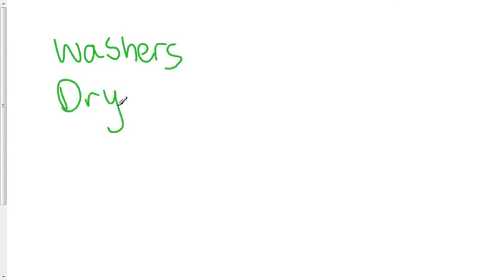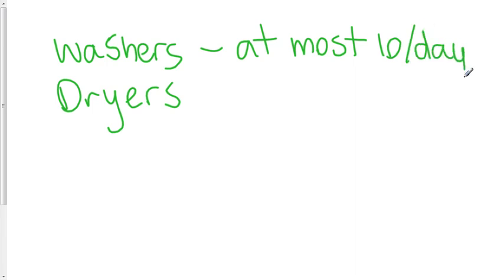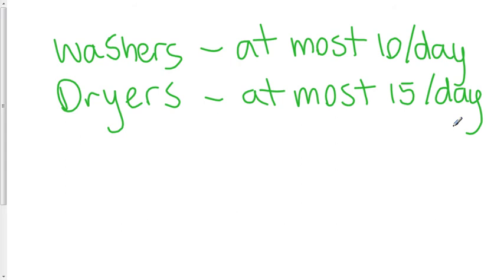Let's say we have a company that manufactures washers and dryers. For some reason, the most washers that they can manufacture in a day is 10. Washers here at most 10 per day. The most number of dryers that they can manufacture in a day is 15. And the most number of machines combined that they can do in a day, so machines per day, is at most 20.